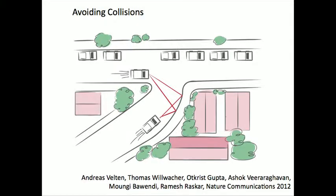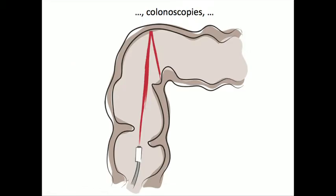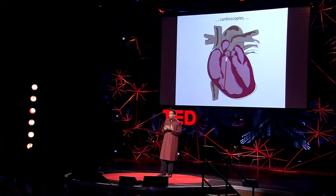We have some ways to go before we take this outside the lab. But in the future, we could create cars that avoid collision with what's around the bend, or look for survivors in hazardous conditions by looking at light reflected through open windows, or build endoscopes that can see deep inside the body around occluders and also for cardioscopes. Because of tissue and blood, this is quite challenging — this is really a call for scientists to start thinking about femto photography as a new imaging modality to solve the next generation of health imaging problems.